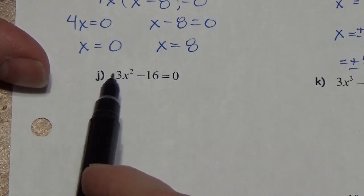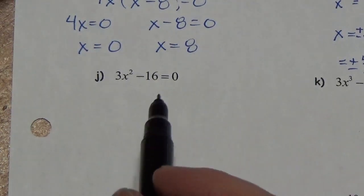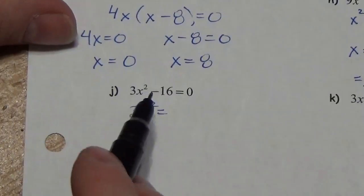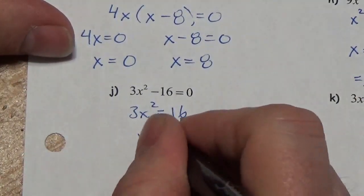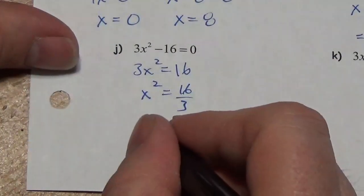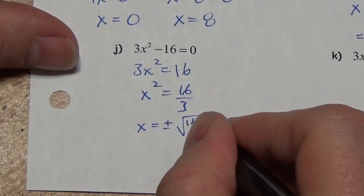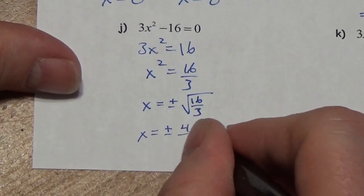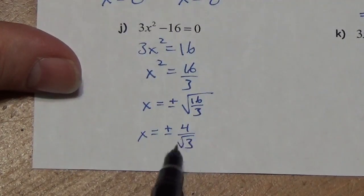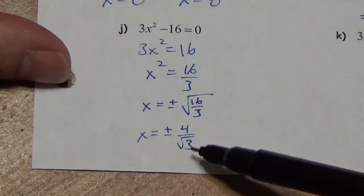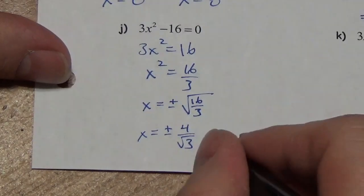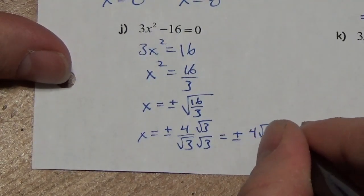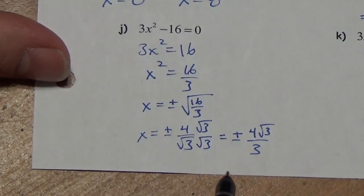Over here, 16 is not divisible by 3, so I can't factor out 3 cleanly. Instead I'll use the square root method: move 16 over to get 3x² = 16, then x² = 16/3, and taking the square root gives x = ±4/√3. I need to rationalize that — multiply numerator and denominator by √3 to get rid of the radical in the denominator. If there's any hesitation about leaving a radical in the denominator, just rationalize it.